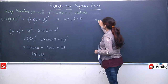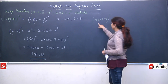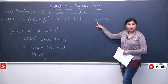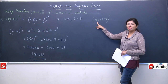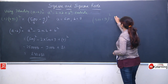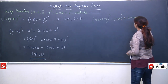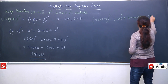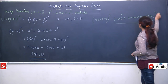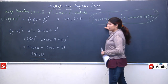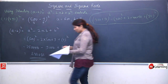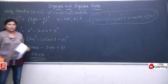Aapke dimaag mein yahan question aa sakta hai ki maine isse (400 + 91) whole square kyun nahi likha. I could write it that way also. But 400 ka square to easy ho jaata nikalna — 4 ka square is 16 — but then 91 ka square nikalna hota. Aur 91 ka square kisi ko bhi tips pe yaad nahi hota. So instead of using the plus identity, I have used the minus identity, because yahan par minus se woh question easy hua. So kab minus use karna hai, kab plus — yeh decision hum khud le sakte hain.